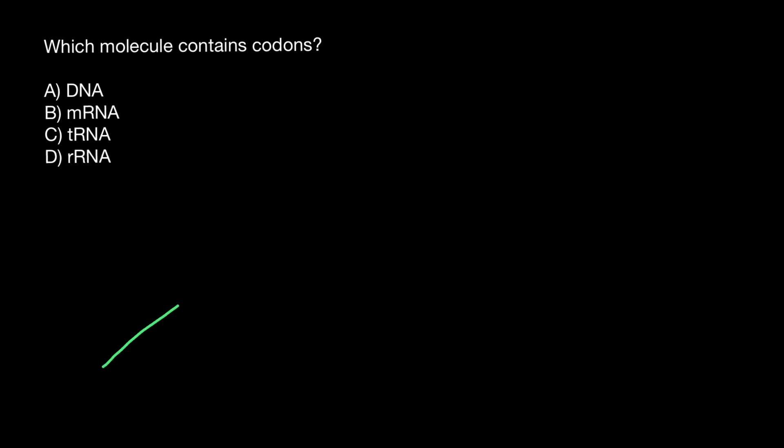Take a look, imagine that this is messenger RNA and here's a five-prime end and three-prime end. And let's imagine we have here certain sequence, which is going to be AUG.